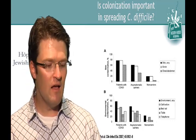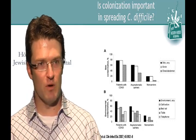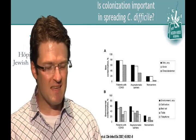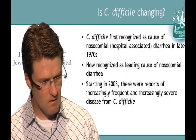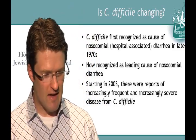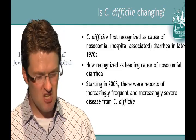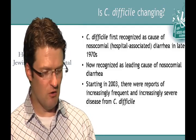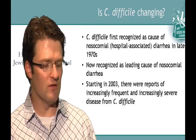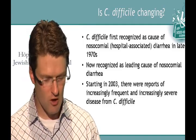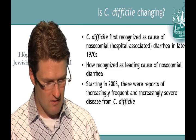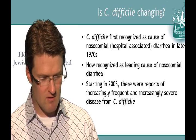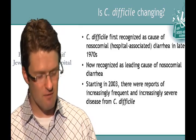This speaks to the idea that even when we do our best to identify C. diff quickly and put people into protective isolation, a lot of other patients in the hospital may be carriers even if they're not sick from it. Is C. diff changing? We first recognized C. diff as a cause of hospital-associated diarrhea back in the late 1970s. It's now the number one cause of diarrhea acquired in hospitals or hospital-like settings. Starting around 2003 or 2004, we started seeing increasingly frequent and increasingly severe disease from C. diff.